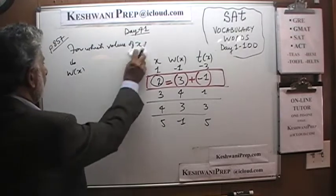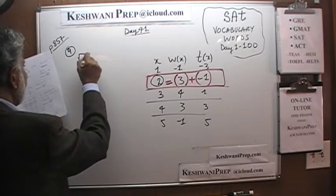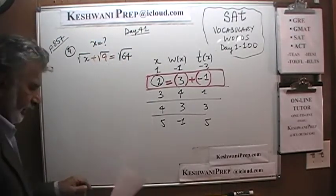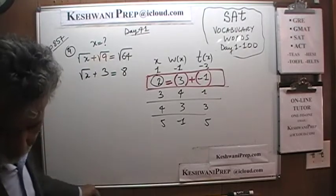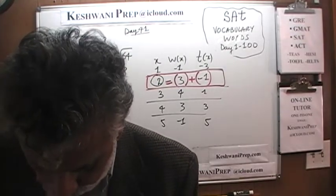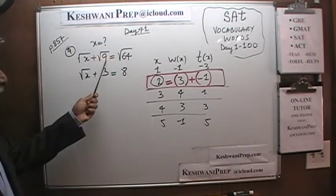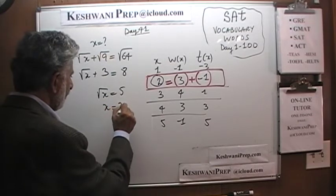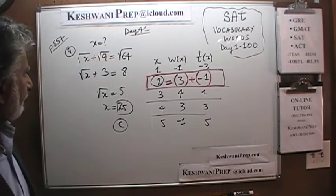Number 9 says that the square root of x plus the square root of 9 equals the square root of 64. The square root of 64 is 8 and the square root of 9 is 3, so the square root of x equals 8 minus 3, which is 5. Therefore x equals 25. We only consider positive roots since all answer choices are positive numbers. The answer is C.